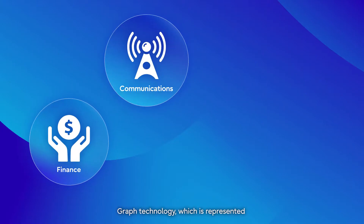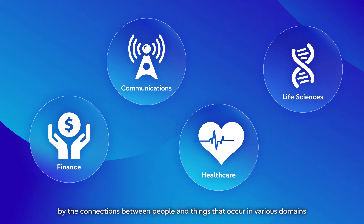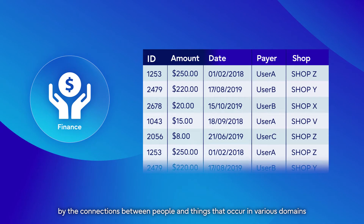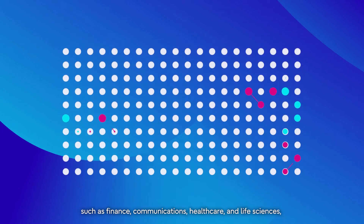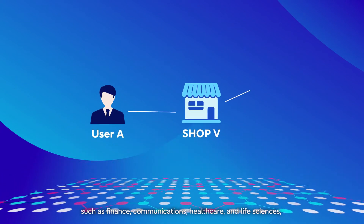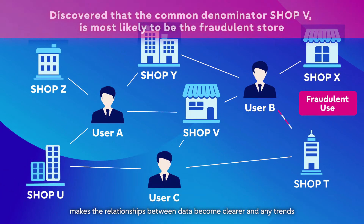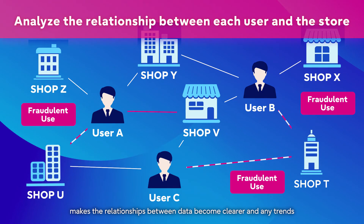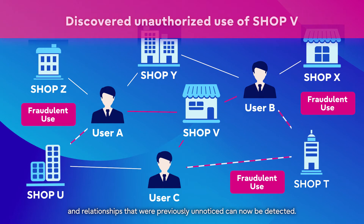Graph technology, which is represented by the connections between people and things that occur in various domains such as finance, communications, healthcare, and life sciences, makes the relationships between data become clearer, and any trends and relationships that were previously unnoticed can now be detected.